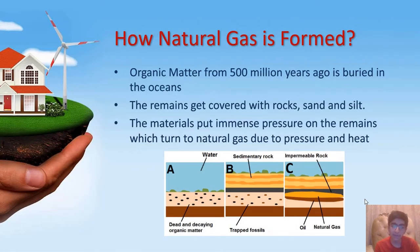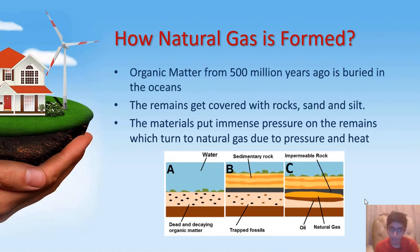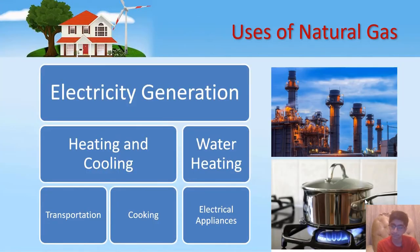How is natural gas formed? Plant or animal matter that lived in the sea died, producing remains, and those remains got covered with rock, soil, and silt, which produced heat and pressure that changed the remains into oil and natural gas. The uses of natural gas are electricity generation, heating and cooling, water heating, transportation, cooking, and electrical appliances.